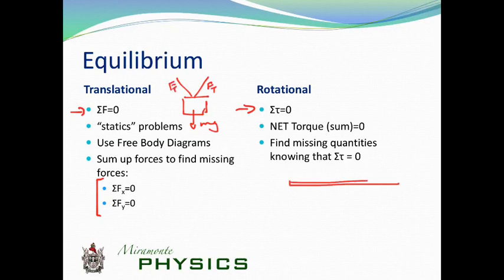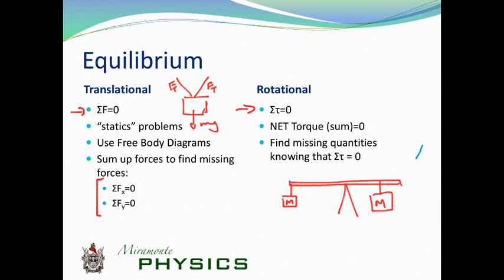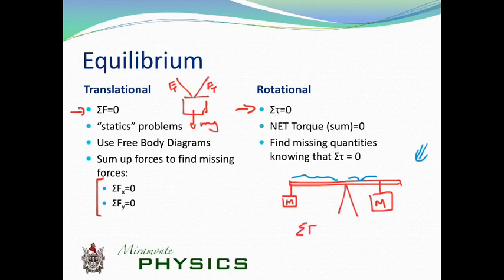Here's a typical free body diagram for a statics problem on the left — you have an mg force down, forces at an angle, and you can find the tension force. On the right is a rotational problem: a balance beam where you sum all forces acting and figure out what distances are needed given certain masses so that the thing doesn't rotate — it stays balanced like a teeter-totter that doesn't tip over. That's the kind of problem we'll be solving. In each case, the sum of the forces is zero and the sum of the torques is zero.